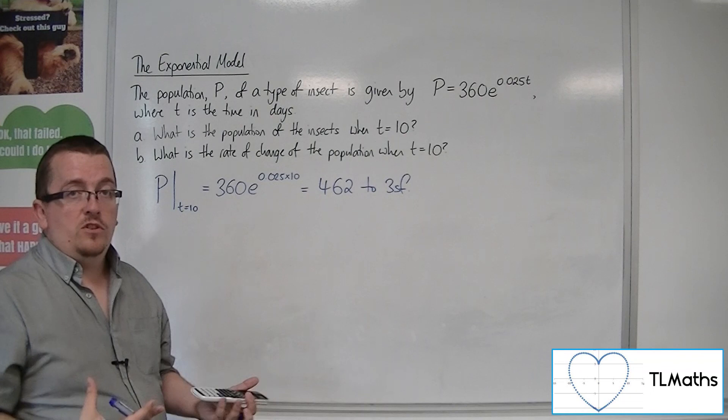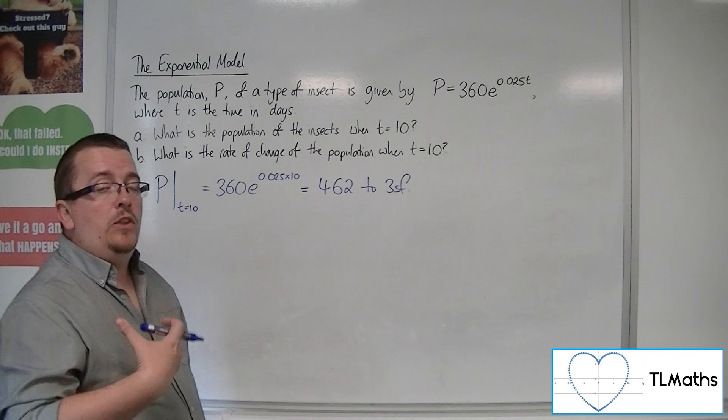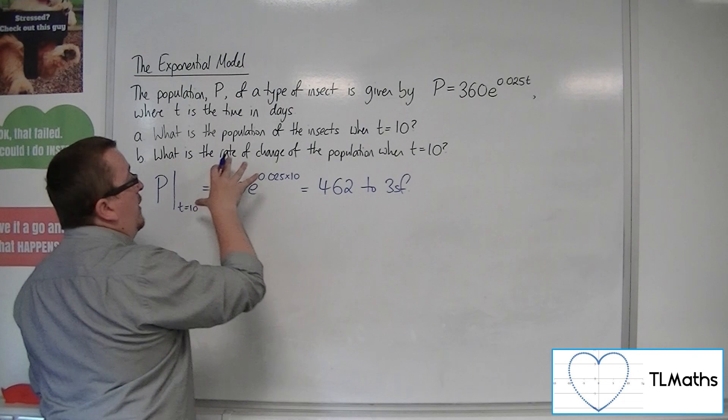What is the rate of change of the population when t equals 10? So in order to do that, you need the gradient function. You need to determine the gradient function to determine how fast it's changing.